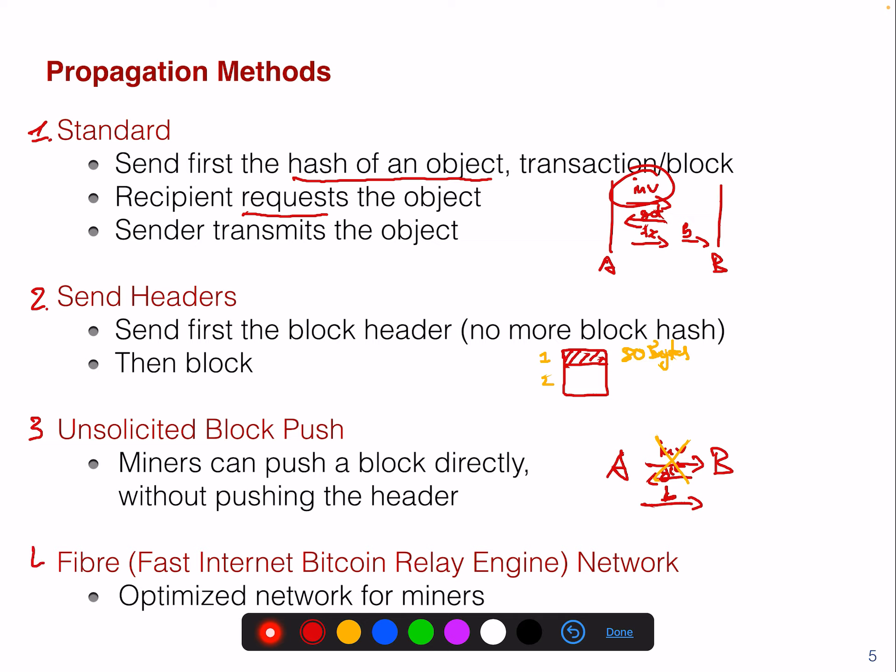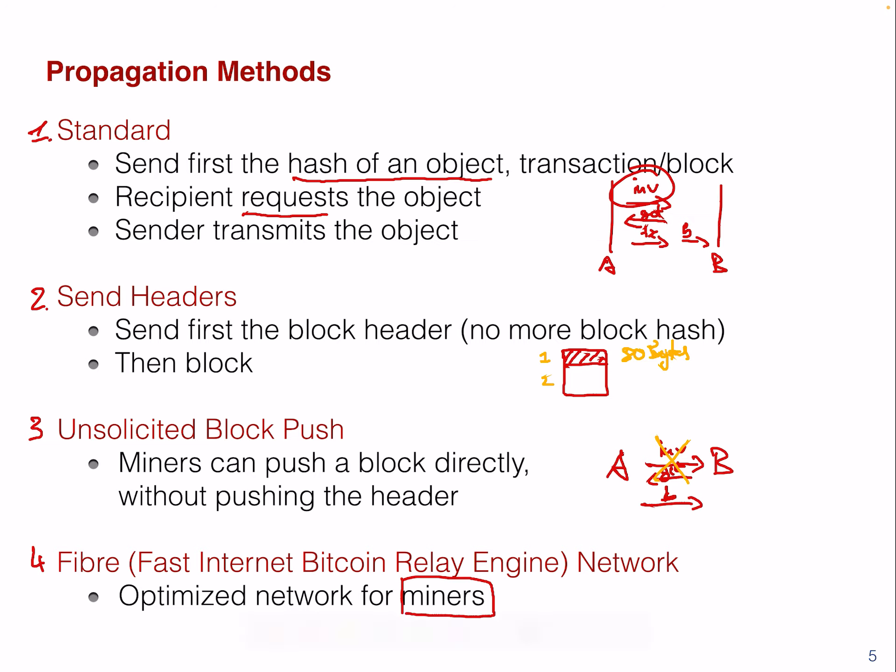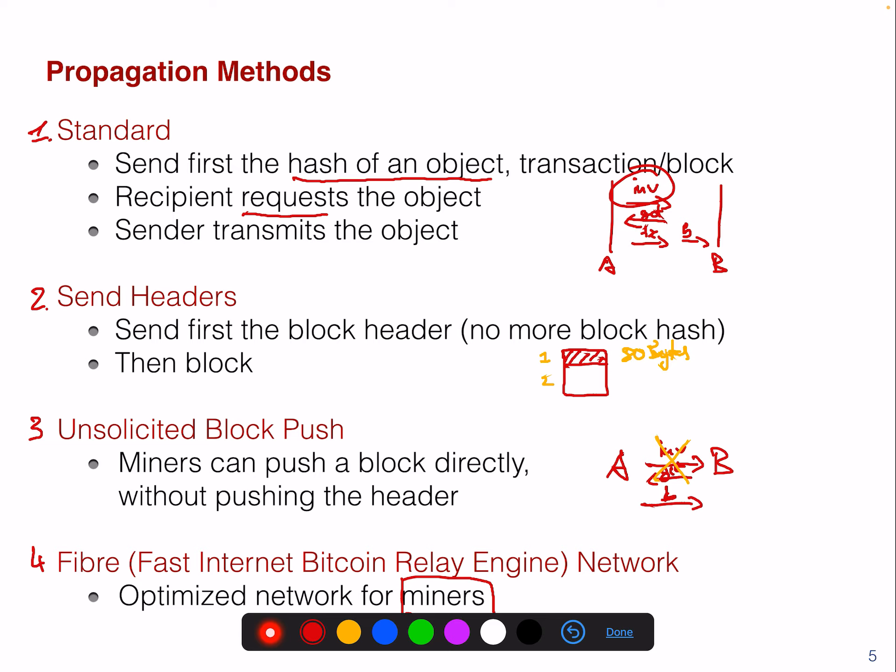Then there's a fourth method for propagation in the Bitcoin network. This is an orthogonal additional mechanism — basically a second network that allows you to relay blocks or transactions, optimized for miners in particular. Miners are really keen on having such a network because the faster they receive transactions or blocks, the better for them in the mining process. If they are outdated, they lose money.